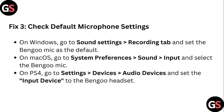Step 3: Check Default Microphone Settings. On Windows, go to Sound Settings, then the Recording tab, and set the Bengo mic as default. On Mac OS, go to System Preferences, then Sound and Input, and select Bengo mic.